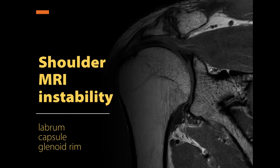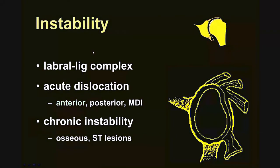It's a pleasure for me to present this topic: Shoulder MR and Instability. My name is Bill Palmer, and I'm a skeletal radiologist from Mass General Hospital in Boston. During the next 25 minutes or so, I'll be looking at glenohumeral instability, including the labrum, the joint capsule, and the glenoid rim. I'll be addressing abnormalities of the labral ligamentous complex in the context of acute dislocation, focusing on anterior dislocation, not so much posterior or multidirectional instability. Then I'll be looking at chronic instability with abnormalities involving both bone and soft tissues.